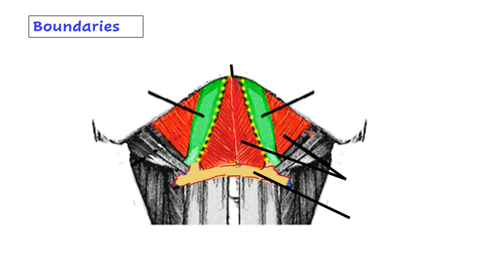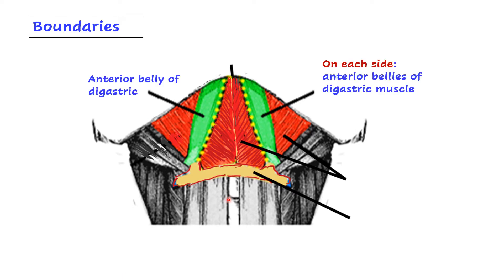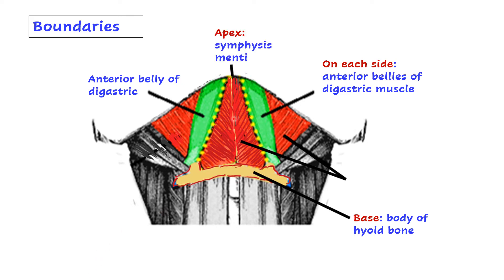Looking at the boundaries of the submental triangle: on each side is the anterior belly of the digastric, the base of the triangle is formed by the hyoid bone, and at the apex is the symphysis menti. The floor of this triangle is formed by the mylohyoid muscles, with their insertion on the fibrous raphe and onto the hyoid bone.